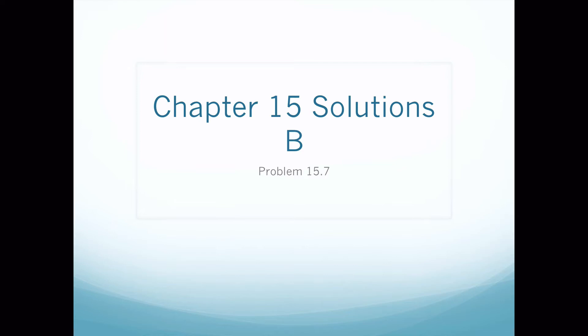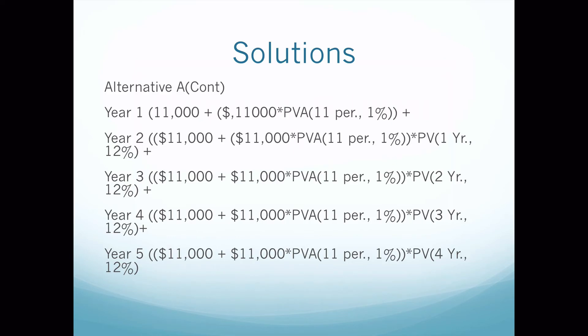We have our annual sales below that, starting with $2.2 million and going down to $3.4 million if you have your text open. The first thing we need to do is work through our formulas for the first alternative, and that's $11,000 plus $11,000 times PVA for 11 years at 1%.